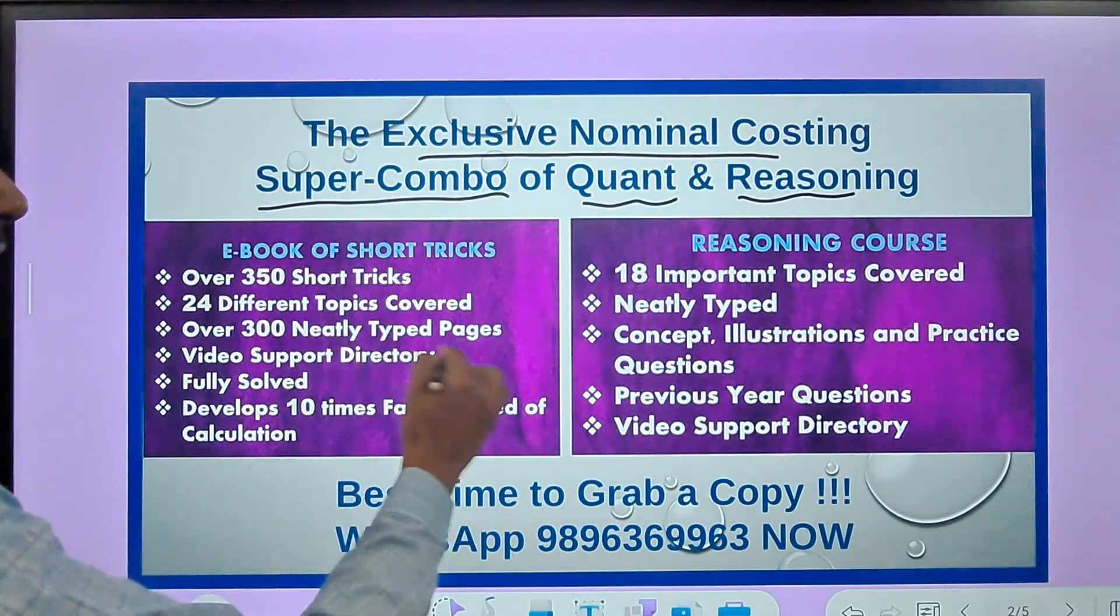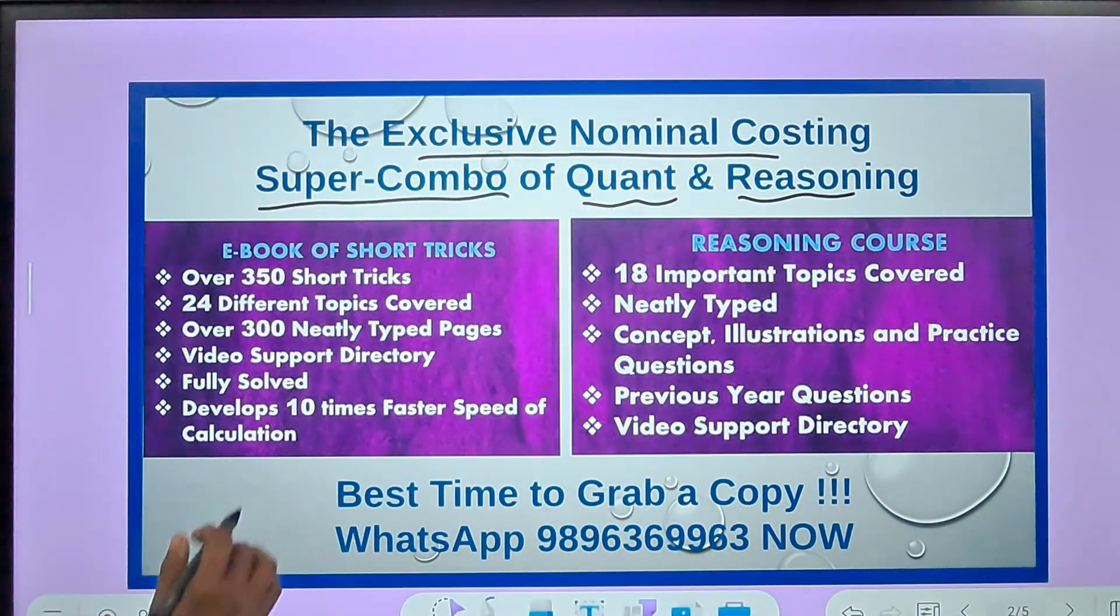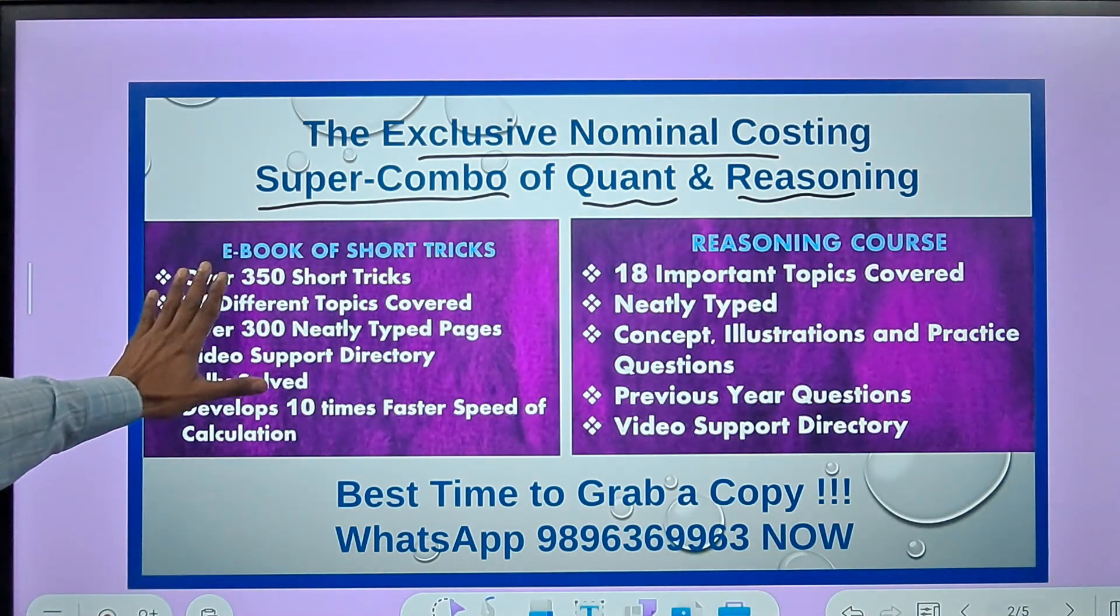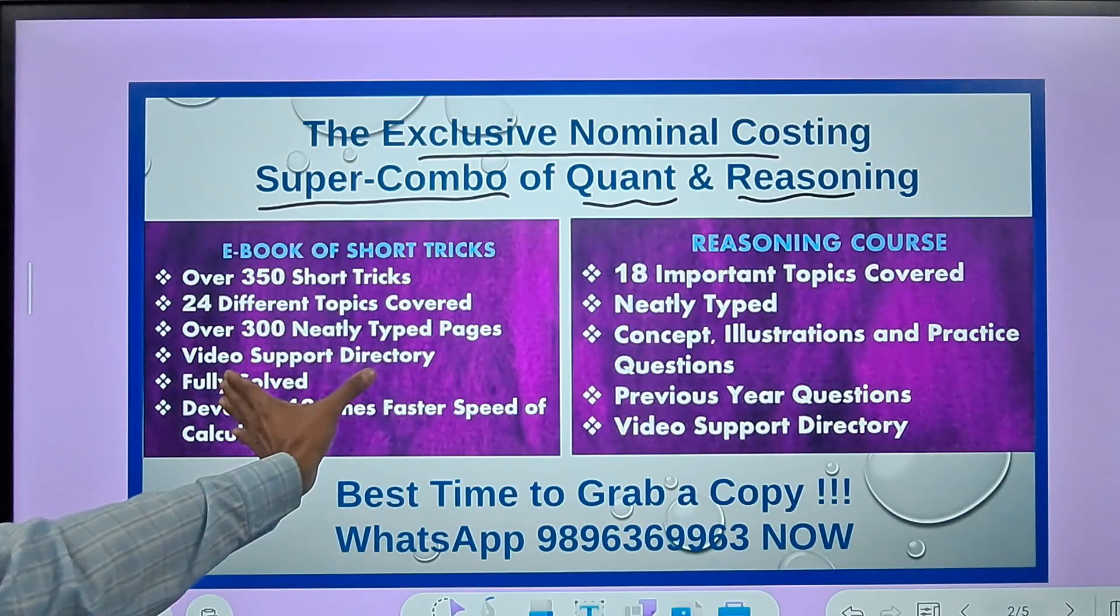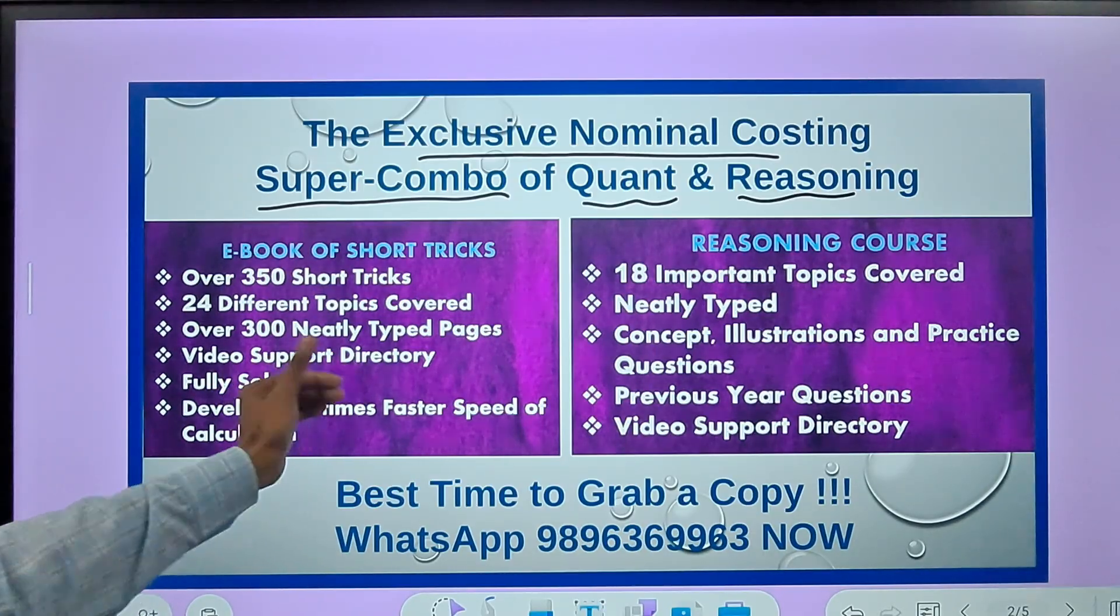If you see this ebook of short tricks and the reasoning course, they contain 24 different topics here and 18 topics here.